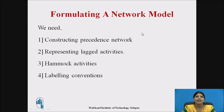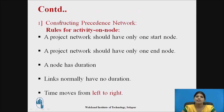Now, formulating a network model requires four methods: first, constructing precedence network; second, representing lagged activities; third, hammock activities; and fourth, labeling conventions. For constructing a precedence network, there are four rules for activity on node. First, a project network should have only one start node. Second, a project network should have only one end node. Third, a node has duration. Fourth, links normally have no duration — so nodes have duration and links do not.